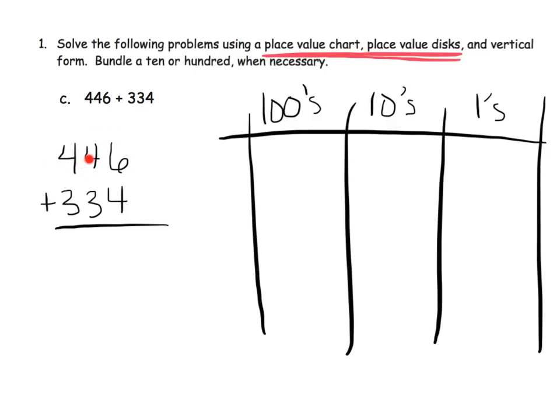We're going to begin by modeling this 446, so let's do that, and I'll do it in blue. So, 400 looks like that, 40 looks like that, and 6 looks like that. So there's our 446, and now we're going to model our 334, so 330 and there's our 4.